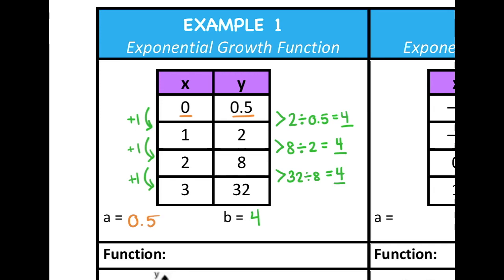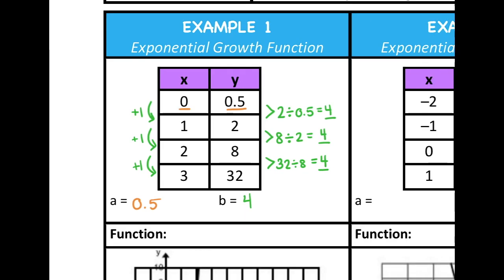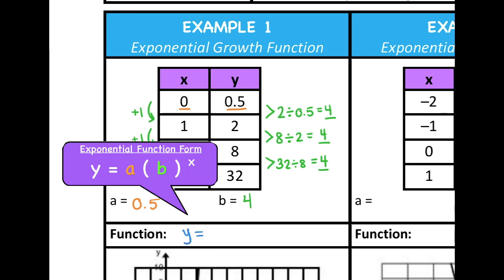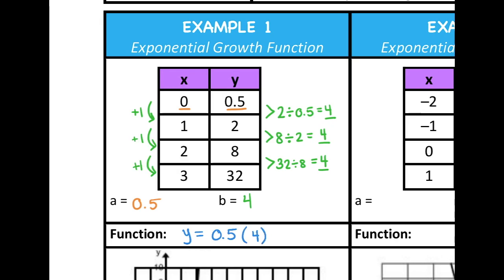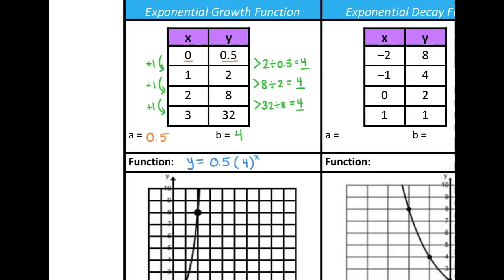So in this case, a is 0.5 or one half. Now in order to write the function that represents this table, all I need to do is substitute my value for a, my initial value, and my common ratio, my value for b, into the form for exponential functions. So I'm going to write y equals the value for a, which is 0.5, multiply that by 4 to the x power, and that's my function. Now if you type this function into a graphing calculator or any graphing program, you would see that the table and the graph correspond to this function that is on the bottom of the worksheet.